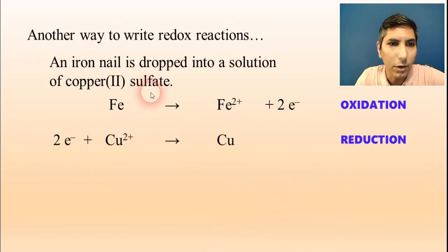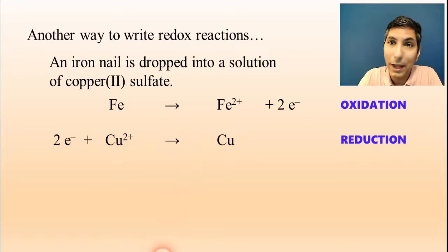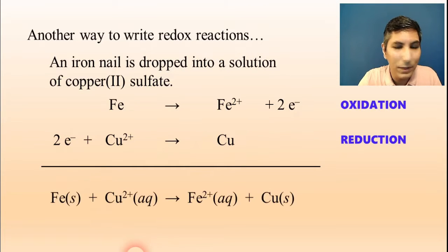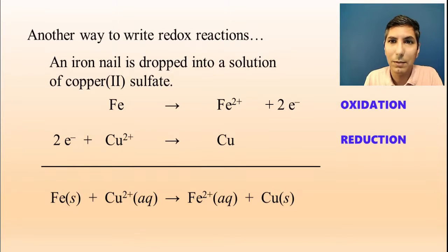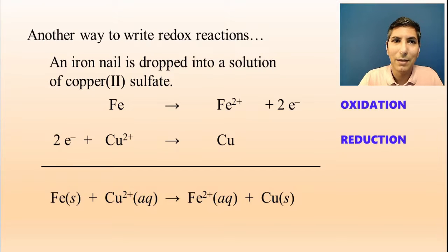The charge on iron is going up — that's oxidation. The charge on copper is going down — that's reduction. We take these two half reactions, add them together, cancel out the two electrons, and we get the overall balanced equation: Fe + Cu2+ → Fe2+ + Cu. That's the balanced equation for that redox reaction.